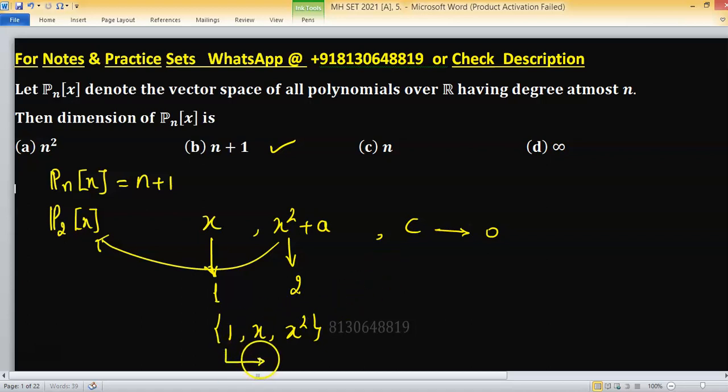1 helps you to generate constant polynomial, x helps you to generate linear polynomial, and x square helps you to generate quadratic polynomial.